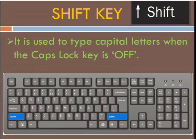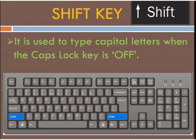Next is the shift key. The shift key is used to type capital letters when the caps lock key is off. If the caps lock key is off and we want to type in uppercase, we press the shift key and the alphabet key at the same time. If the caps lock key is on, pressing the shift key with an alphabet key will display small letters instead.